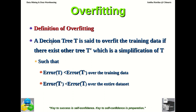To repeat: a decision tree T is said to overfit the training data when there exists another tree T' which is a simplification of T, satisfying these two conditions. First, the error of T must be less than the error of T' over the training data. But second, the error of T' is less than the error of T over the entire data set.